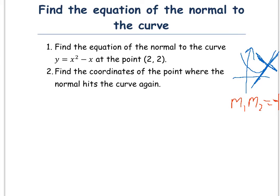This is a very important fact to help us answer this question. Firstly, it says find the equation of the normal to the curve y equals x squared minus x at the point (2, 2). What we need to find first is the gradient of the tangent. To do that, we differentiate this first, so dy by dx equals 2x minus 1.